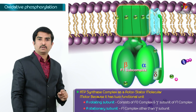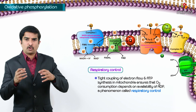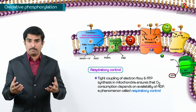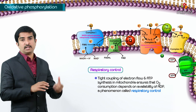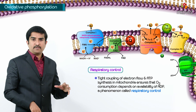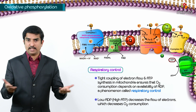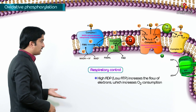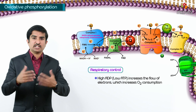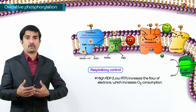There is a tight coupling of electron flow and ATP synthesis in the mitochondria that ensures oxygen consumption depends on the availability of ADP. This phenomenon is called respiratory control. Low ADP (meaning high ATP) decreases electron flow and decreases oxygen consumption during rest. High ADP (meaning low ATP) increases electron flow and increases oxygen consumption, which corresponds to exercising when the body's demand for oxygen increases.